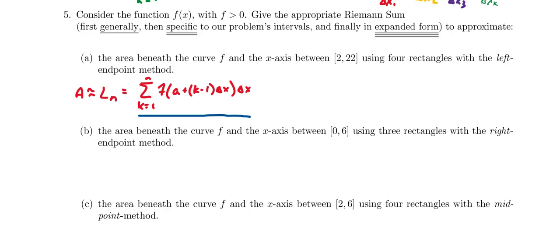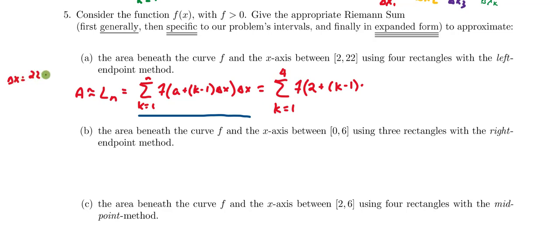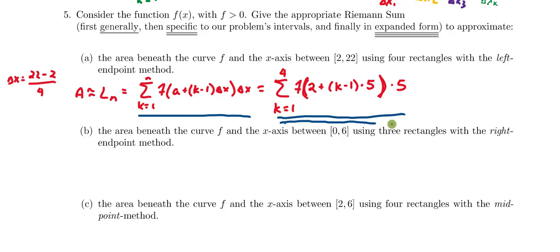Now let's tailor this Riemann sum specifically for our problem. This is going to be the sum from k equals 1 to 4, because we want four rectangles. We'll have f of a — which is 2, our left endpoint — plus (k minus 1) times delta x. Delta x equals (22 minus 2) divided by 4, so delta x is 5. All of that goes inside the function, then we multiply by another 5 for the delta x on the outside.